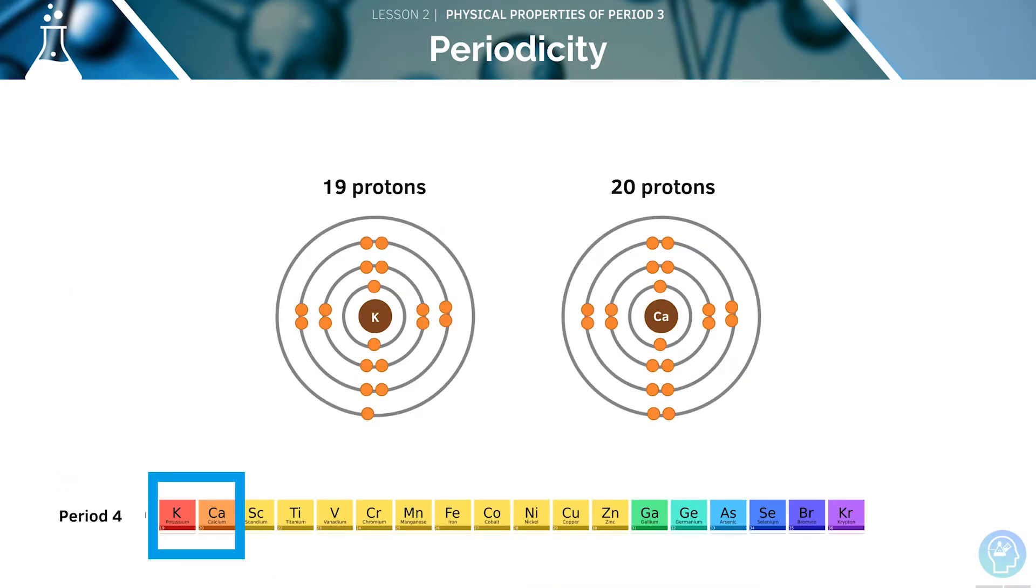For example, here are some of the group 2 elements. They all have two outer electrons. However, there are 19 protons in potassium and 20 in calcium, which means that these electrons are going to attract more strongly than these electrons.